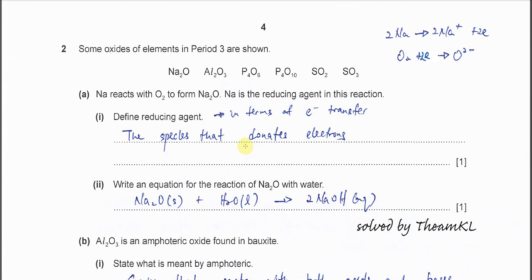Second question. Some oxides of the elements in period 3 are shown, from sodium to sulfur oxides. Part A: Sodium reacts with oxygen to form sodium oxide. Sodium is a reducing agent. Define reducing agent.